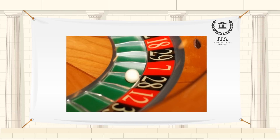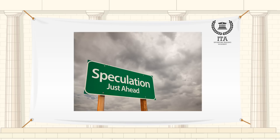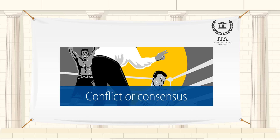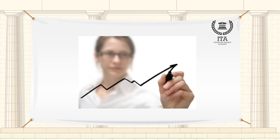Zero-sum games are essentially bets. In the financial markets, for instance, speculators essentially place bets on the future prices of certain commodities. Thus, if you disagree with the consensus that wheat prices are going to fall, you might buy a futures contract. If your prediction is right and wheat prices increase, you could make money by selling the futures contract before it expires.